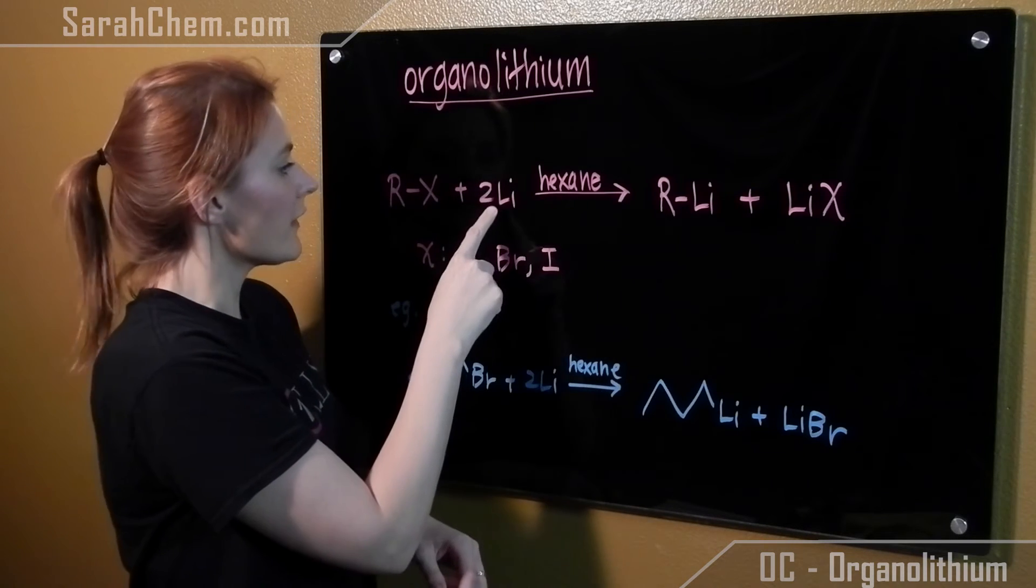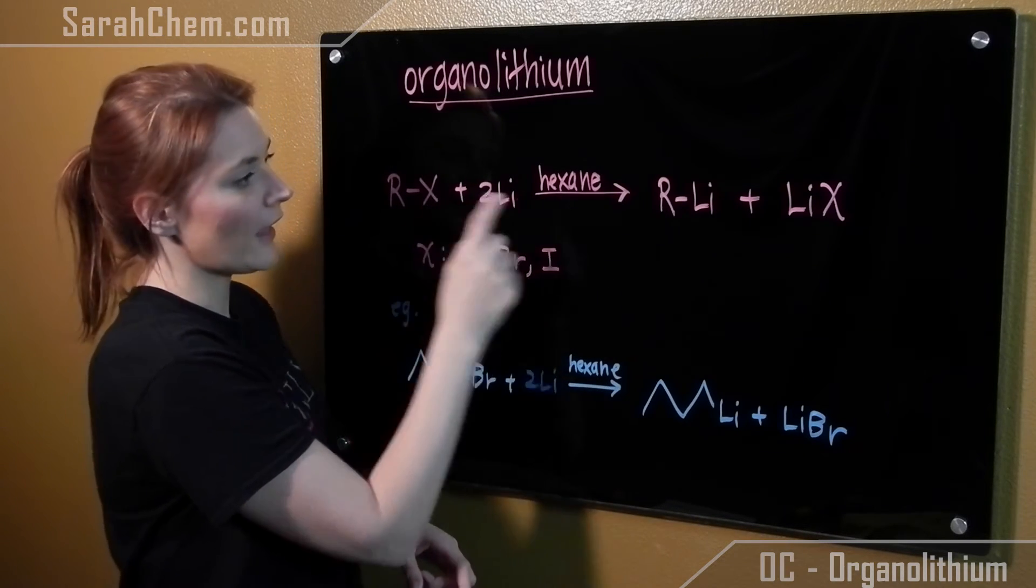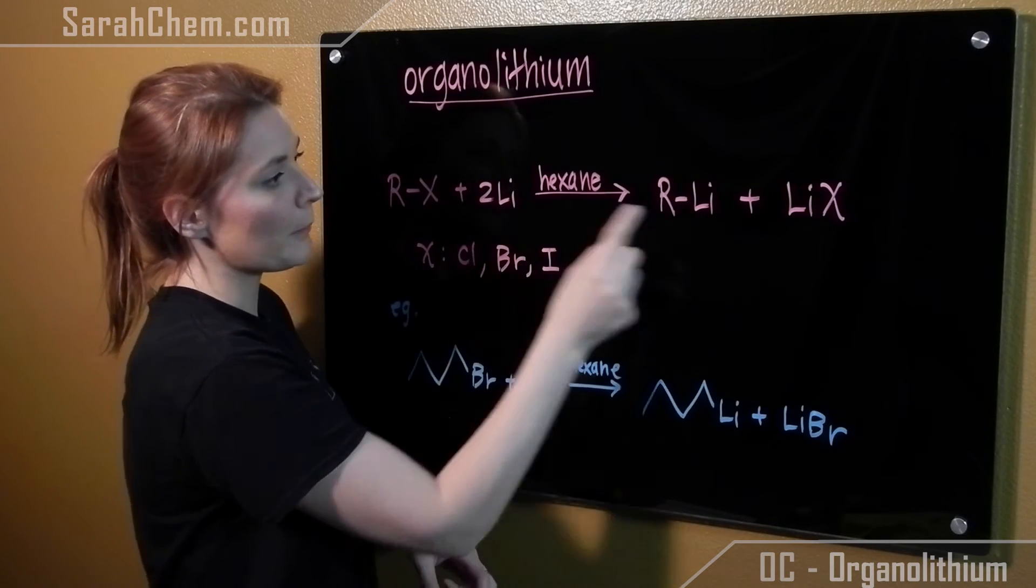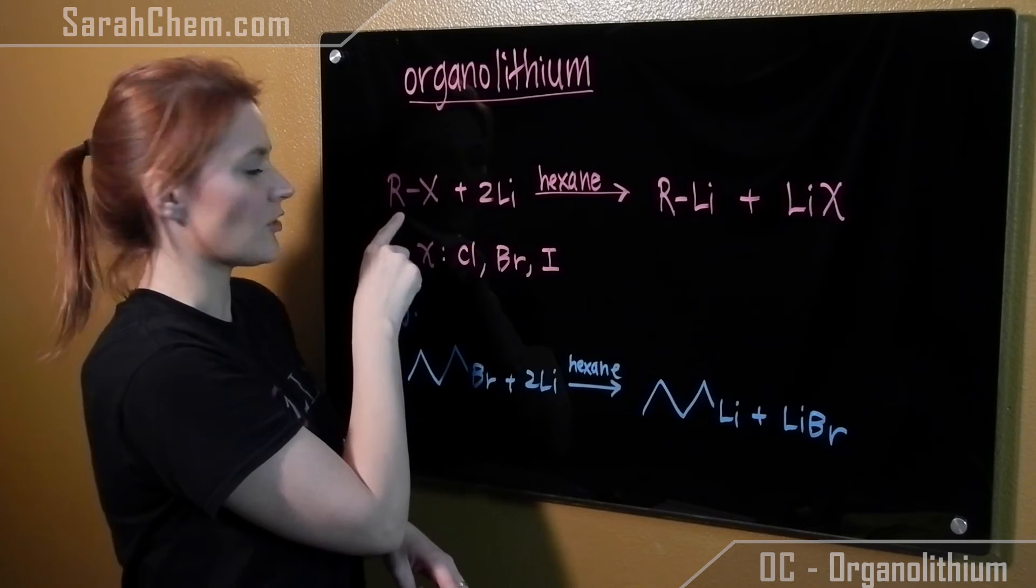What we'll see happen is that the lithium will come and substitute out the X, so we get the organolithium here, and the second lithium will be partnered up with whatever halide was attached to the R group initially.